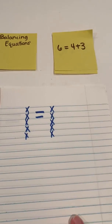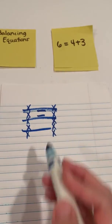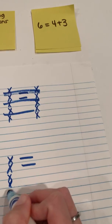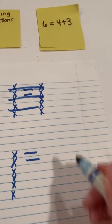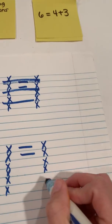Now what if I have 6—I'm sorry—6 equals 4 plus 3. So I'm going to come down here now. 6 equals 4 plus 3. So I'm going to represent 6: 1, 2, 3, 4, 5, 6. And then I'm going to represent 4 and then add on 3 more.